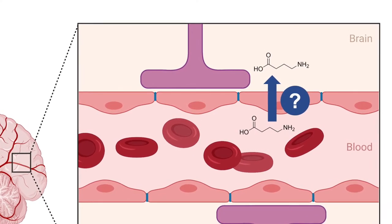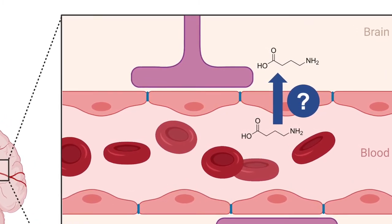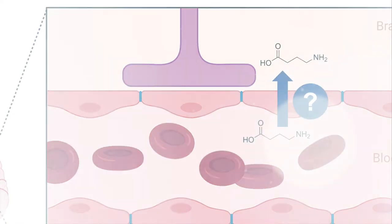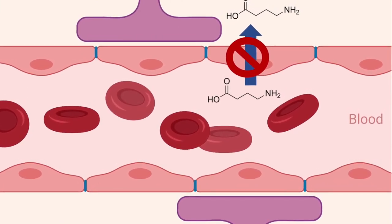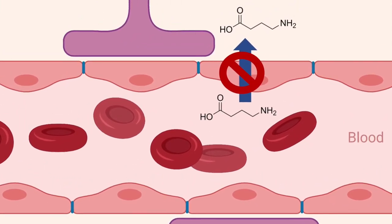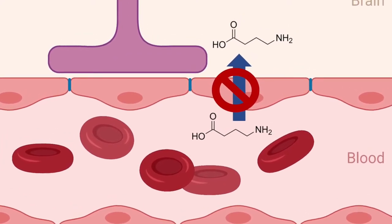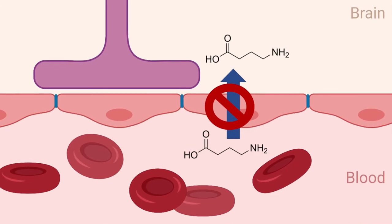One of the most common questions received from medical professionals is whether orally administered GABA crosses the blood-brain barrier. This is a barrier that consists of extracellular layers around the capillary walls of the vessels in the brain. These astrocyte feet, shown in purple, create an additional barrier that makes it hard for some substances to cross into brain tissue from those blood vessels. For several decades, it's been assumed that GABA can't get across this barrier.